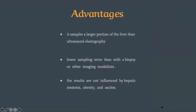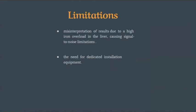Advantages of MRI elastography: it samples a large portion of the liver than ultrasound elastography, lower sampling error than biopsy or other imaging modalities. The results are not influenced by hepatic stenosis, obesity, and ascites.